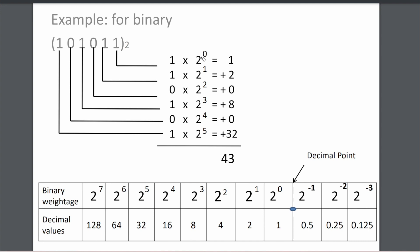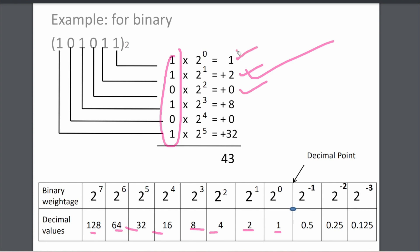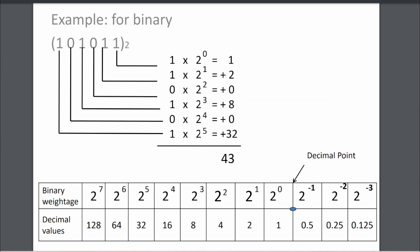Now we calculate: 2^0=1, multiplied by 1 is 1. 2^1=2, multiplied by 1 is 2. 2^2=4, multiplied by 0 is 0. 2^3=8, multiplied by 1 is 8. 2^4=16, multiplied by 0 is 0. 2^5=32, multiplied by 1 is 32. We then add: 1 plus 2 plus 8 plus 32. Adding the units: 8 plus 2 is 10, plus 2 is 12, plus 1 is 13, carry 1 and 3; then 3 plus 1 is 4. So the binary number 101011 converted to the decimal number system is 43.